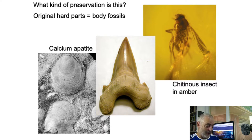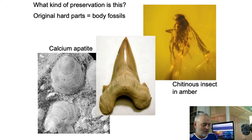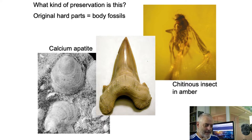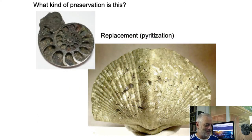Glossopetrae from the island of Malta — Steno proved those things were actually from sharks. On the left-hand side is a type of brachiopod — brachiopods and bivalves may look superficially alike but have different planes of symmetry and different skeletal structures. These were called inarticulate brachiopods because they didn't have a complex hinge structure; today we call them calcium phosphatic brachiopods. They're usually about two to three millimeters in length. Even your professor can forget to include a scale — it's good practice to always have one.